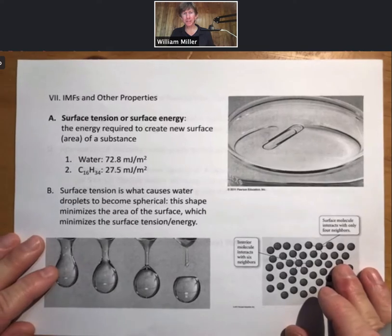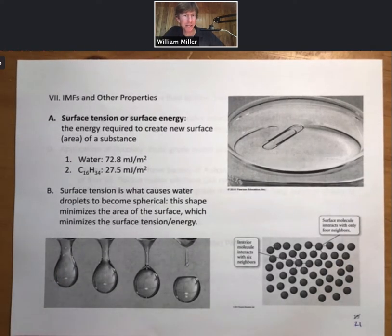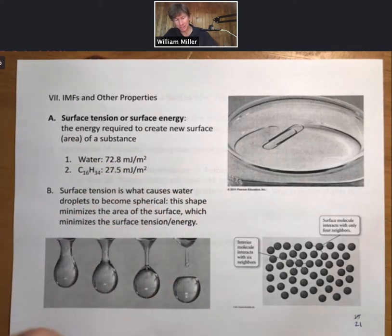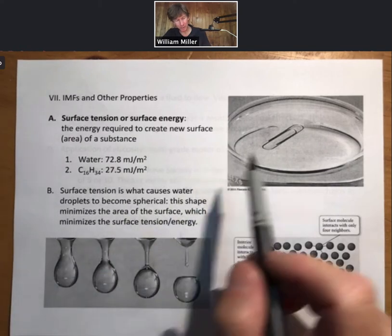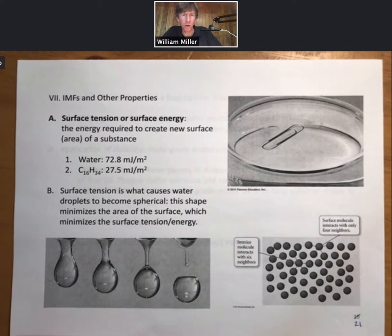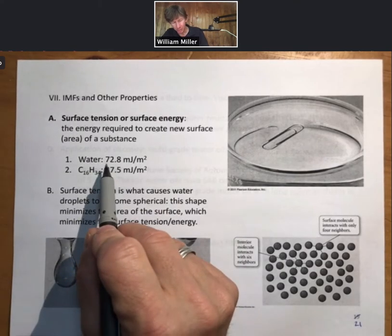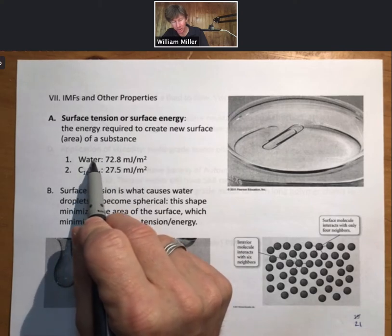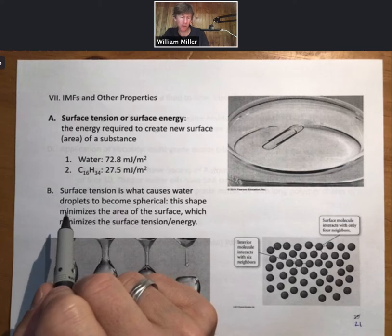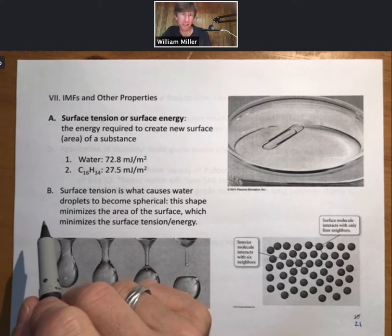There's a couple other properties we mentioned. We want to mention these relatively quickly. Besides boiling and freezing points or melting points, there are a whole host of properties that are very important and related to intermolecular forces. Surface tension or surface energy. That's what allows a paperclip to float on water. Water has a surface energy of 72.8 millijoules per meter squared. If you've ever seen water bugs float on water as well.